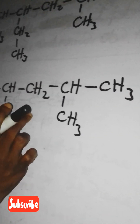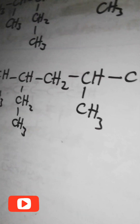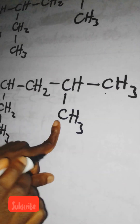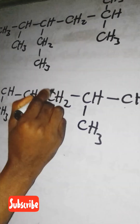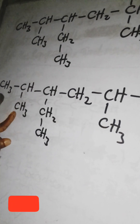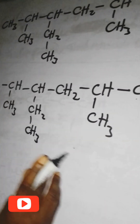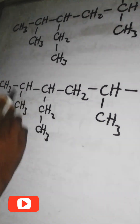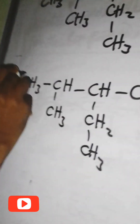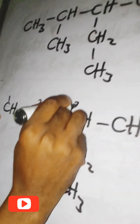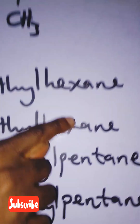Now, how do we number it? We number from the end where the branches are closer. From one end, you get a branch at position two; from the other end, you get a branch at positions two and three. Overall, two branches are closer to this end, so we number from here: one, two, three, four, five, six.